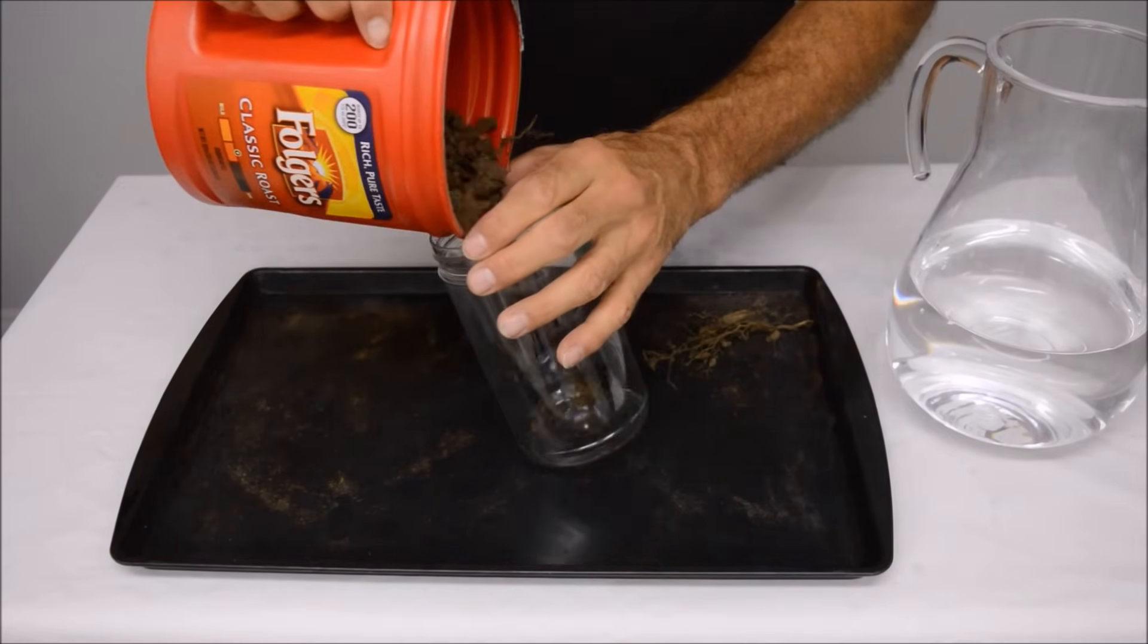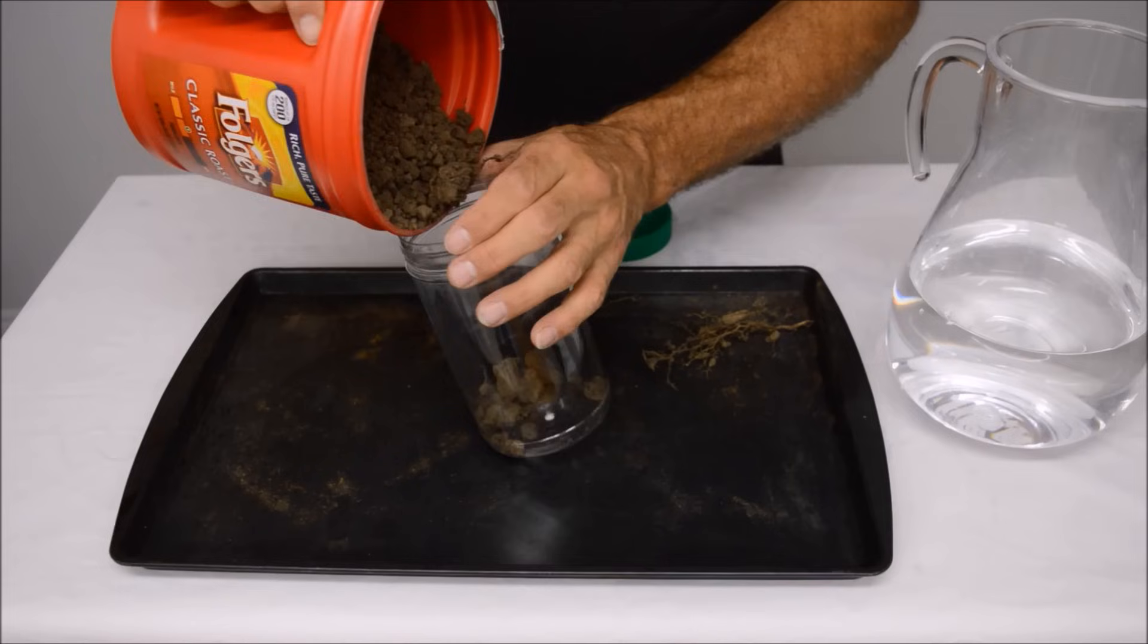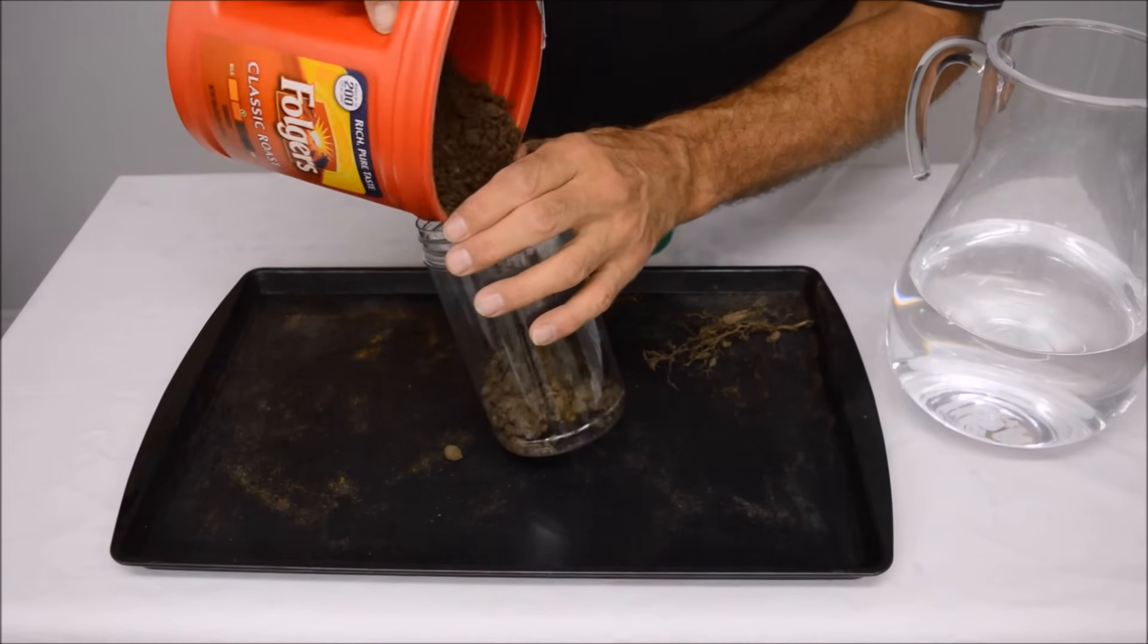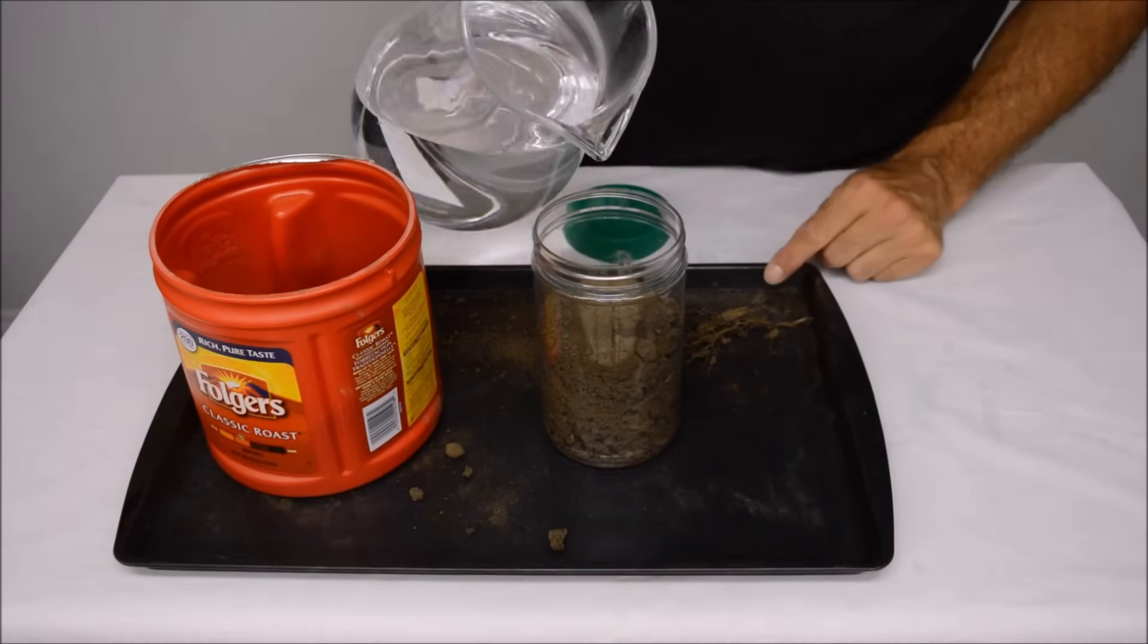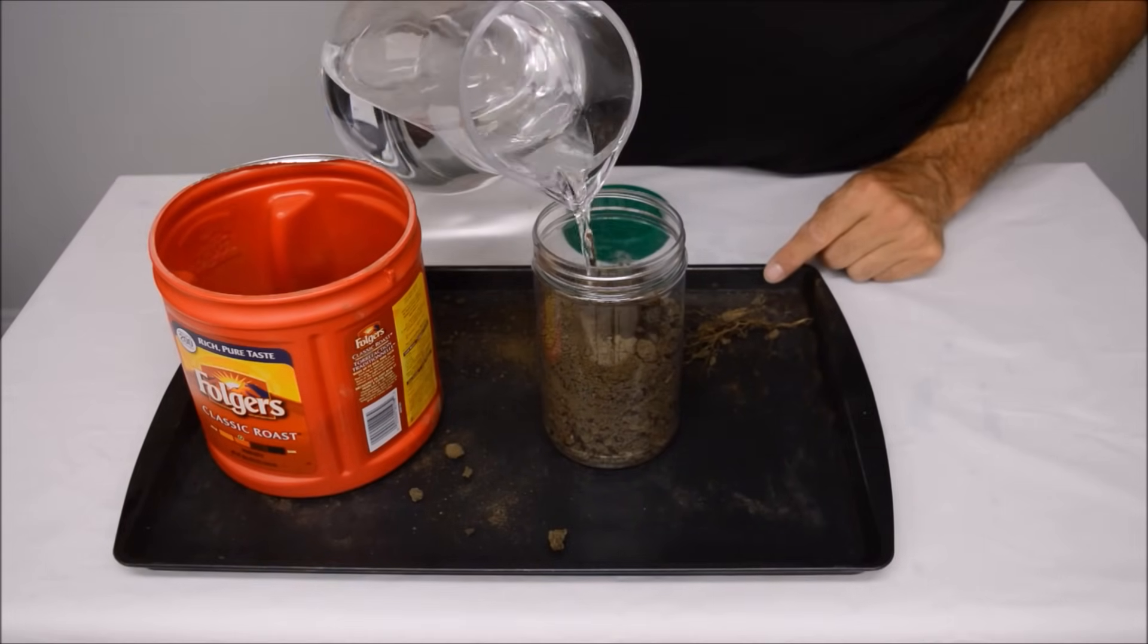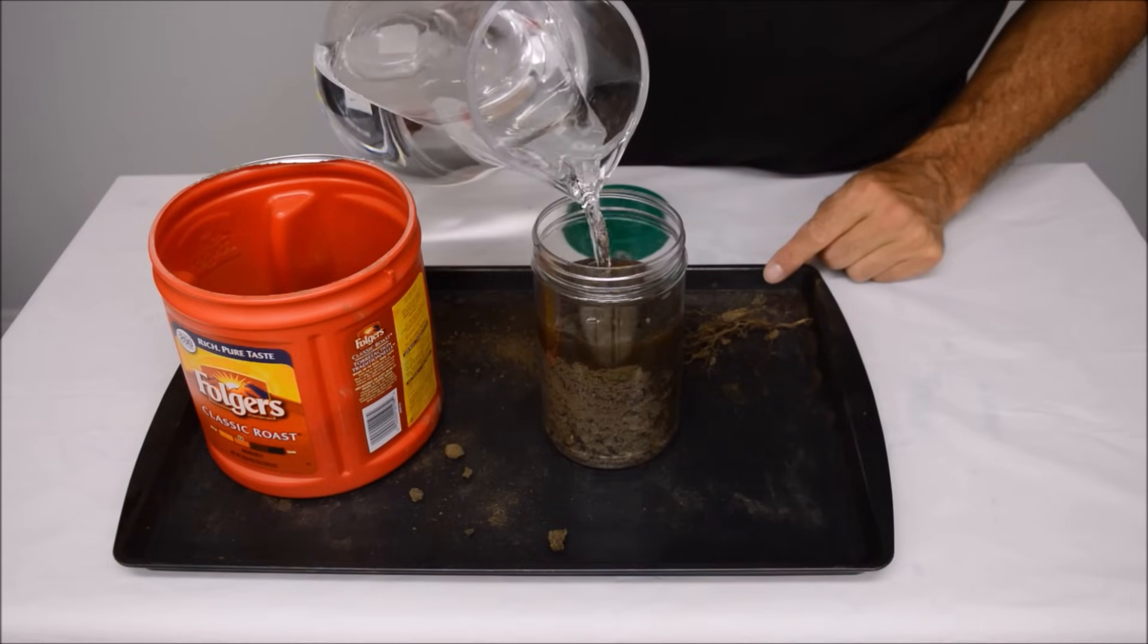Take the soil and add it to the jar so that it is about three quarters full. Now add water to almost fill the jar. You want to leave some air space at the top of the jar for mixing.